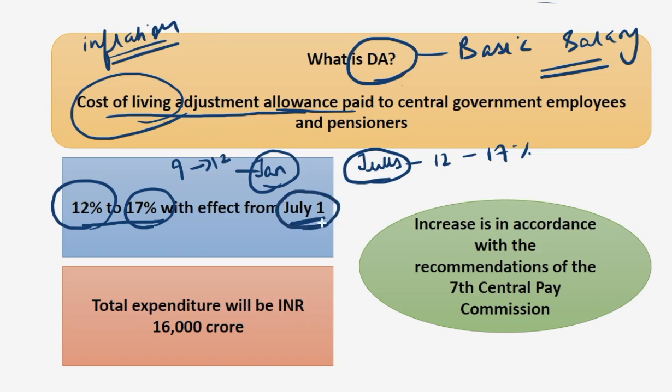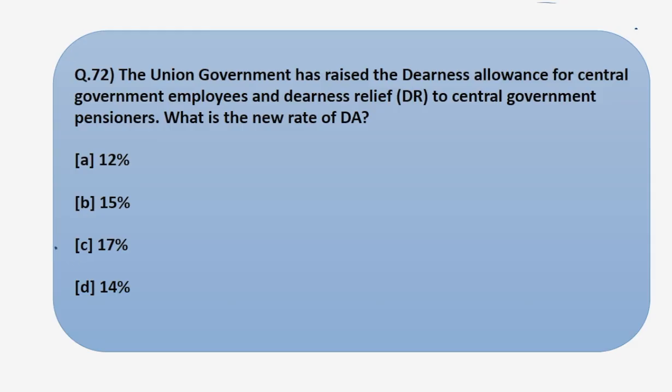It is effective from July 1, which means that in October the government will pay the three-month arrears along with the new dearness allowance. This rate hike costs 16,000 crore rupees and is in accordance with the recommendations of the Seventh Central Pay Commission. So our answer is 17%.